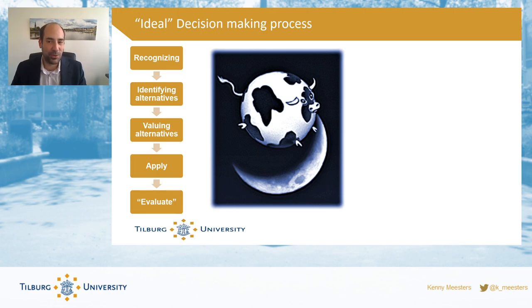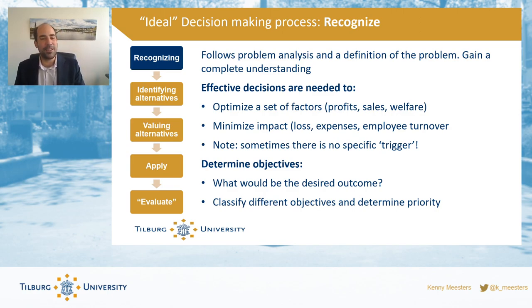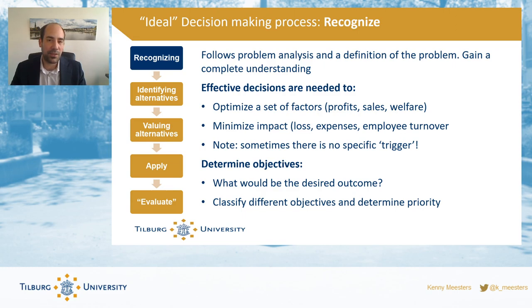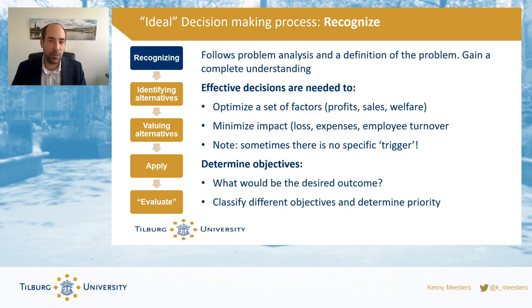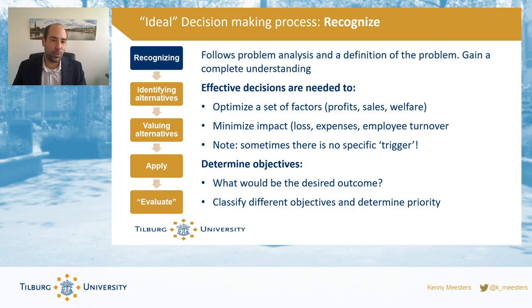Translating that rational decision-making process to IT and information systems: it starts with recognizing that there is a problem to be solved or an opportunity to be gained. You need a full understanding of the situation. A decision could be triggered by wanting to optimize something — maximize profits, sell more, increase welfare — or to minimize impact, reduce costs, reduce expenses, or retain employees. These are triggers that drive you to recognize you need to change something.